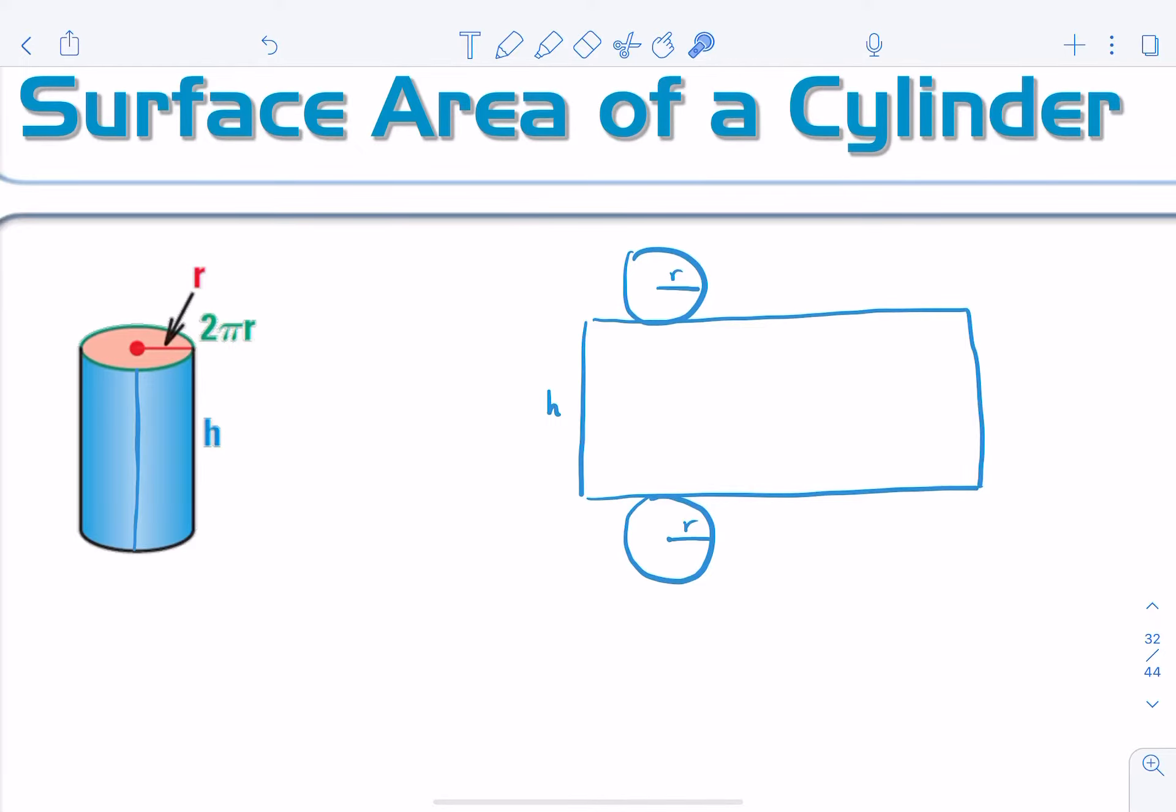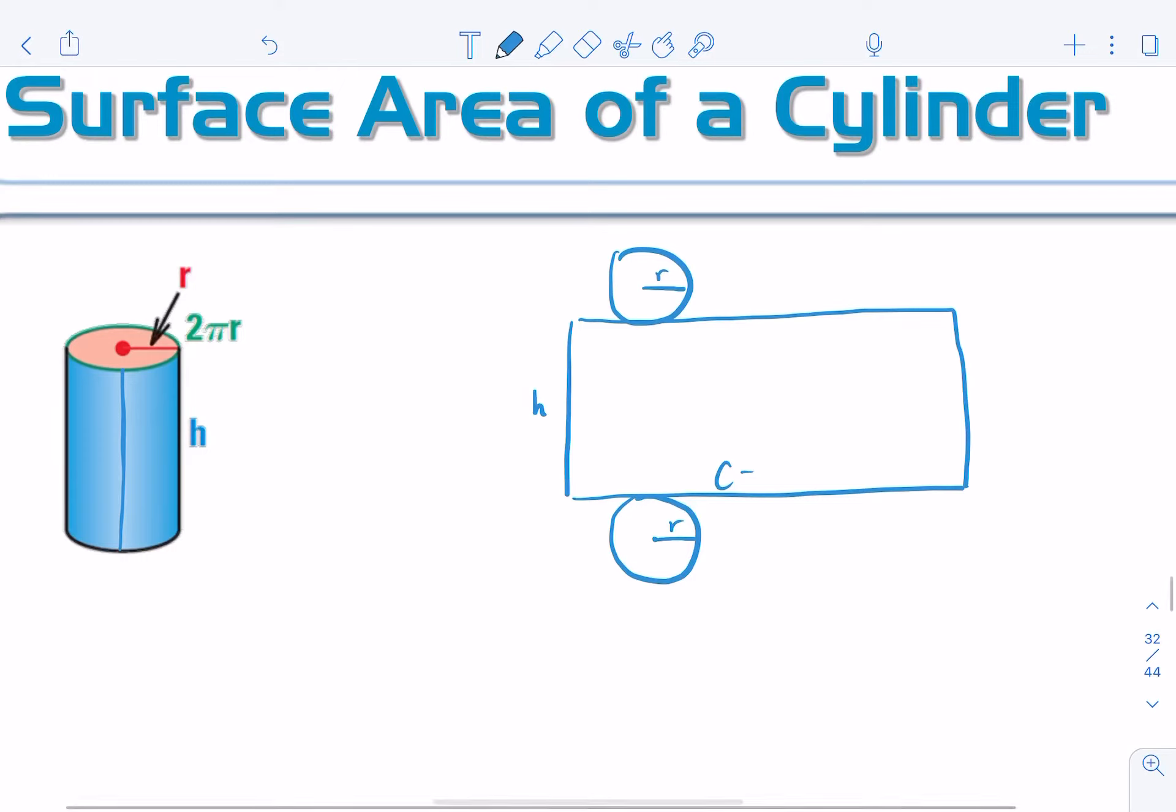It's the circumference of the circle, which is 2πr. So if I want the lateral surface area here, I'm going to take the base length, 2πr, and multiply it times the height.